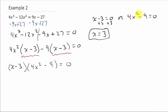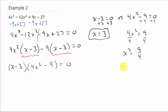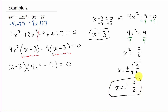For the second factor, I'll use the square root property again. Adding 9 to both sides gives 4x squared equals 9. Dividing both sides by 4 gives x squared equals 9 over 4. By the square root property, x equals plus or minus the square root of 9 over 4, so x equals plus or minus 3 halves. Those are the other solutions.